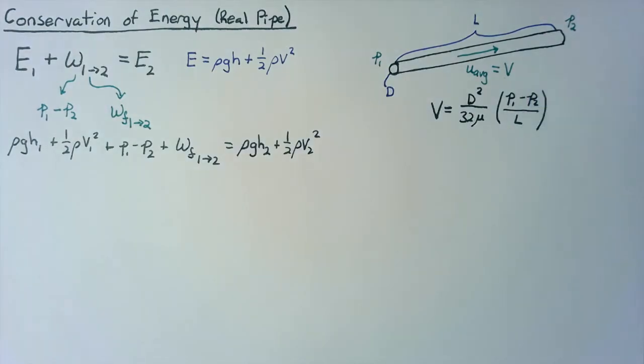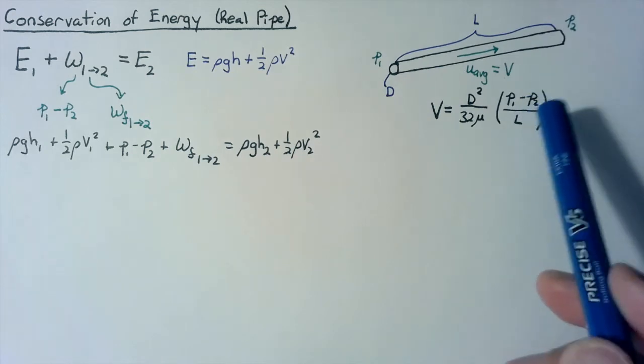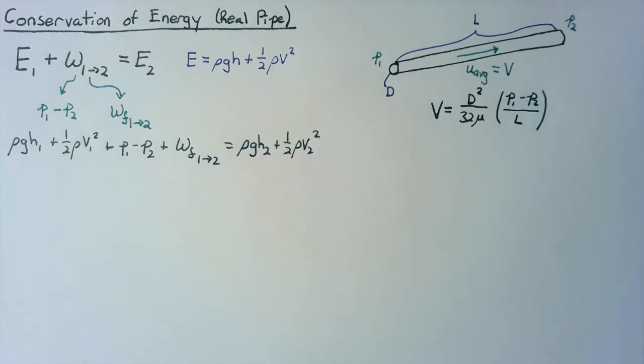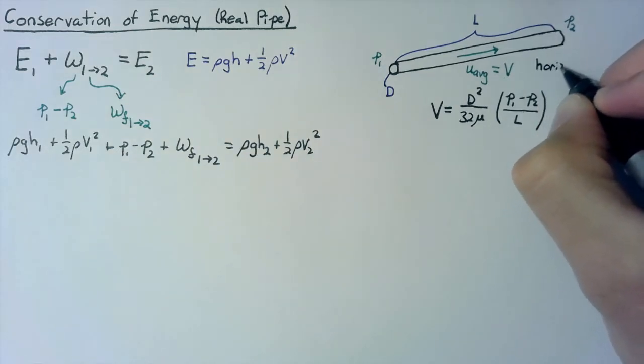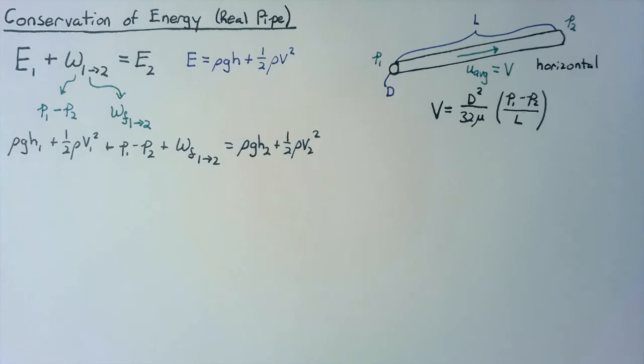So really what we'd like to do is constrain this to the point where we can come up with P1 minus P2 for our system. So let's make two additional constraints. First off, let's say that this is horizontal, and what this means is that H1 is going to be equal to H2. We don't have to worry about those contributions.